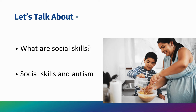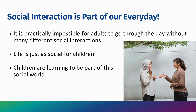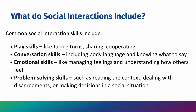Let's talk about it. What are social skills and what do social skills in autism look like? Social interactions are part of our everyday. Just consider the conversation you have with the teller when you're getting your coffee in the morning, or the quick hello to your child's bus driver when you're dropping them off. It's practically impossible for adults to go through the day without many different social interactions, and life is just as social for children. Social interaction means knowing how people are expected to behave in certain situations — these are sometimes called social rules. Social skills involve paying attention to social information, interpreting what's going on in certain situations, problem solving in those situations, and then responding.